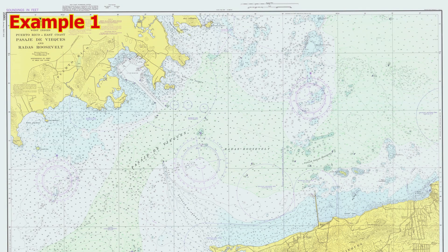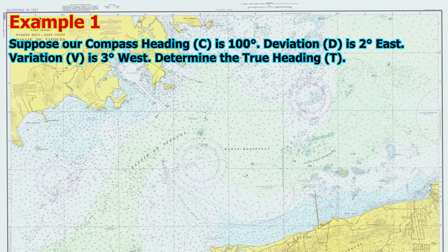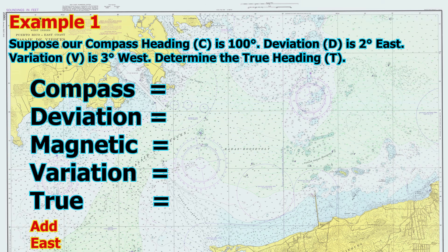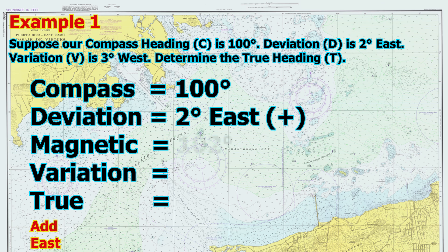Section 3: sample calculation. Example 1. Suppose our compass heading is 100 degrees. The deviation is 2 degrees east. The variation is 3 degrees west. We need to determine the true heading. Step 1, apply deviation: compass 100 plus 2 east equals magnetic 102.